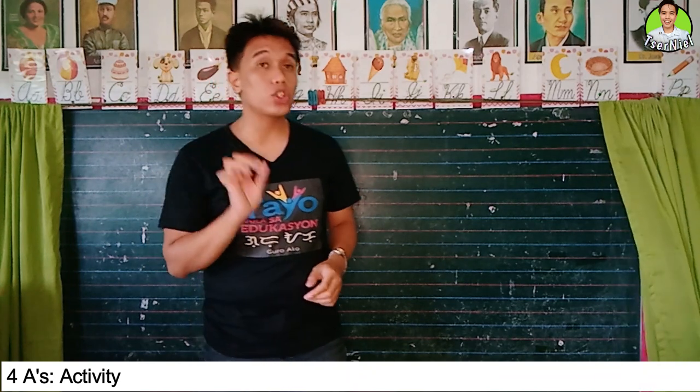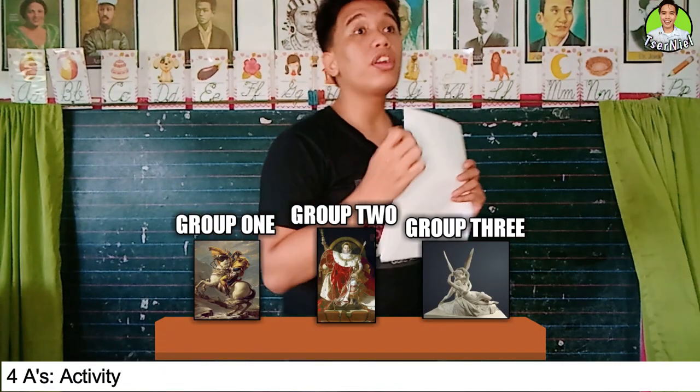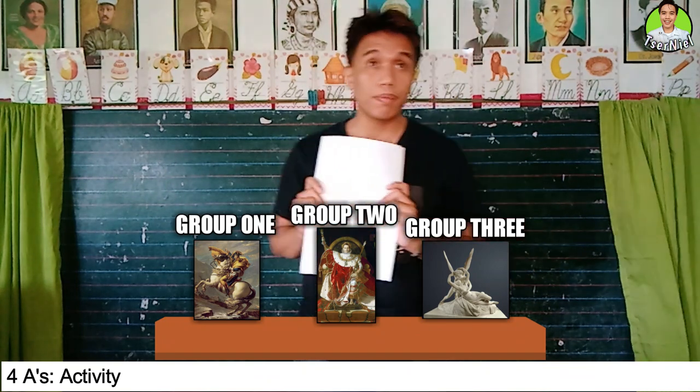Is everybody finished? Okay, keep the activity sheet. Let us discover the correct answers to the questions in your activity sheet by doing the next activity. Let's have a group activity. I will group you into three. This will be group one, you will be group two, and this will be group three. I will give each group a poster of a painting and an observation table. I want you to examine the painting, and as you examine it, write your observations in the observation table. Do you understand?